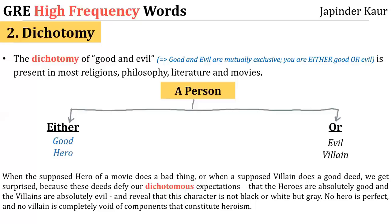Likewise, good and evil is a very common dichotomy in religion, philosophy, literature, and movies. We see good and evil as mutually exclusive and opposite categories and think that a person can be either good or evil. This is why we are always surprised when the supposed hero of a movie does a bad thing, or when a supposed villain does a good deed — because these deeds defy our dichotomous expectations and reveal that the character is not black or white, but gray.